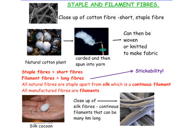Staple and filament fibres — fibres are also defined by their length. Staple fibres are very short, while filament fibres are long. Staple fibres tend to be all natural fibres; for example, if you took a ball of wool and pulled it apart, the fibres would be very small. There is one exception: silk, where the fibre on the silkworm cocoon would be a long filament fibre. Because we can manufacture fabrics, all synthetic fibres such as nylon and polyester are filament.